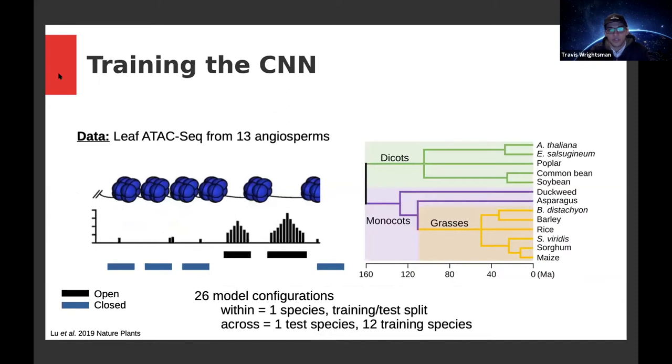I trained this convolutional neural network using an excellent leaf ATAC-seq dataset from 13 angiosperm species that was published last year by Bob Schmidt's group at the University of Georgia. I trained this CNN in 26 different configurations: 13 within species models where I took one species, split the genomic regions into training and test sets, and evaluated the model in the test set. I also trained 13 across species models where I took one test species, trained in the genomic regions of the other 12, and tried to predict chromatin accessibility in the 13th species.